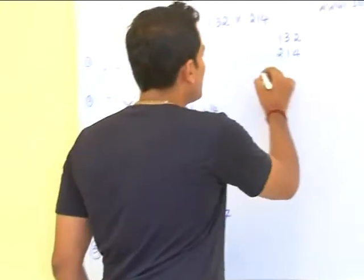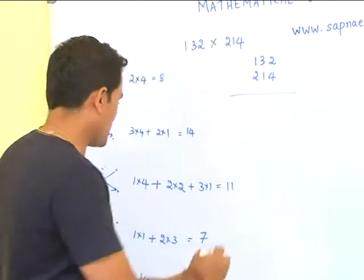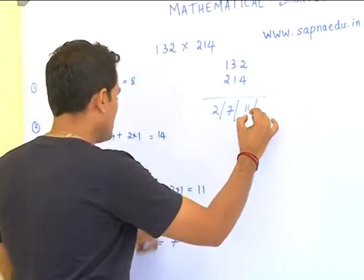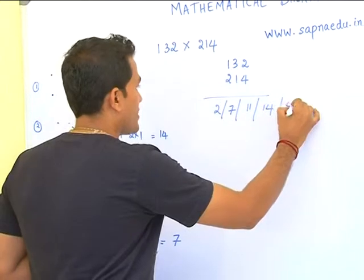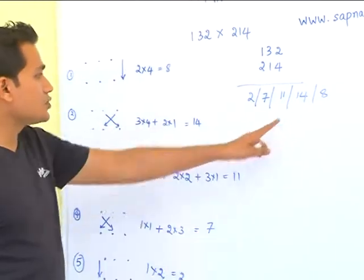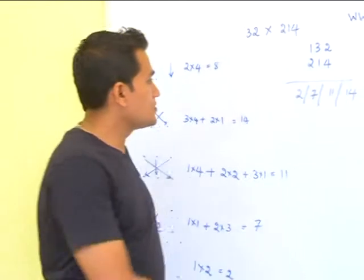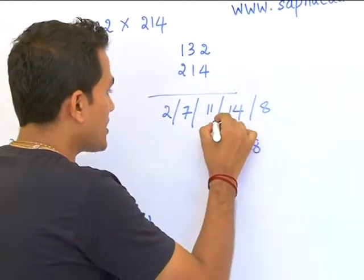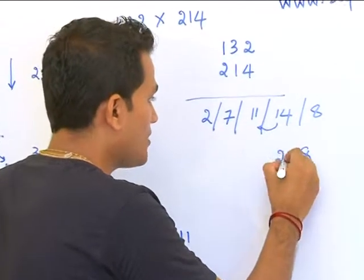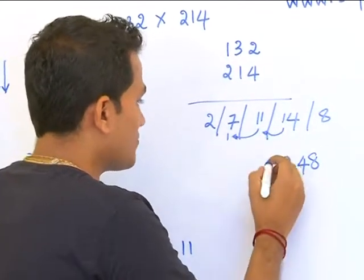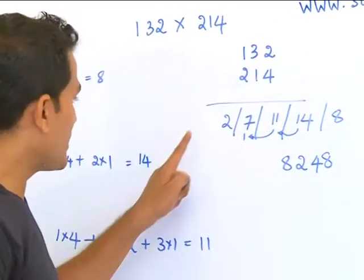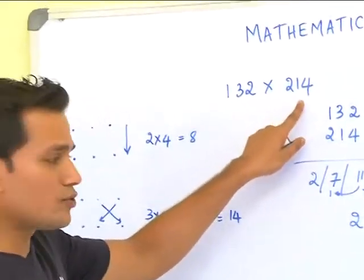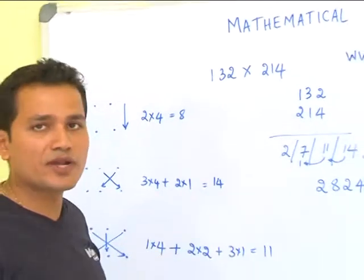So, 132 into 240 would be 2, 7, 11, 14 and 8. So as I told you before, you cannot keep more than 1 digit. So the rest of the digits are carried forward. 8, 4. 1 is carried forward here. 11 plus 1 is 12. And 1 is carried forward again. 7 plus 1 is 8. And you have 2 at the front. So 132 into 240 would be 28248.